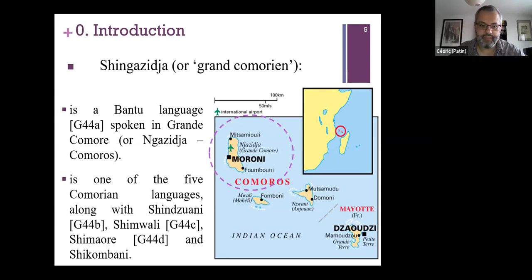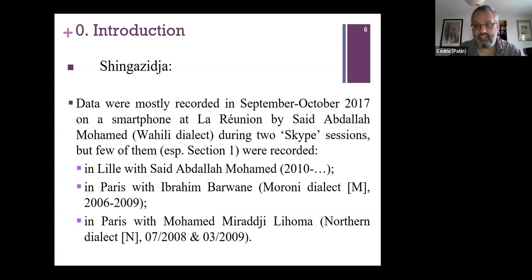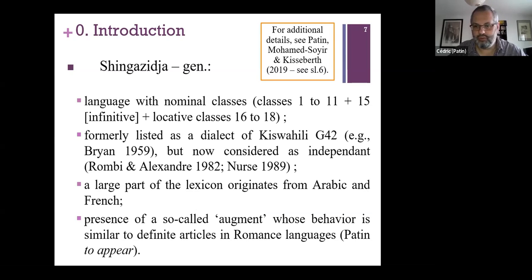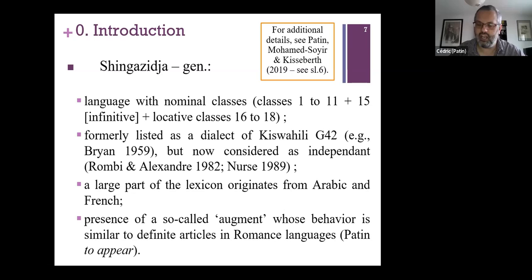Some background on Shingazija: it's a Bantu language spoken in Grand Comoro, or the Comoros. It's one of the five Comorian languages. The data were mostly recorded when my main informant was in La Réunion, via Skype. Shingazija has nominal classes; it was at one time considered a dialect of Kiswahili but that is no longer the case. Because of colonization, a large part of the lexicon comes from Arabic or French. There is also an augment that behaves almost like a definite article, similar to Romance languages.